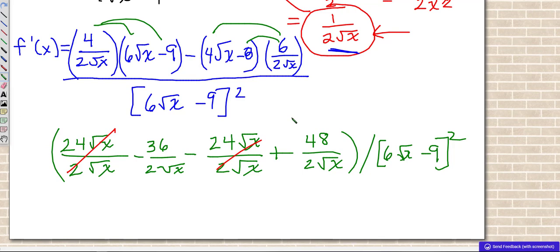I can see that 2 would go into 36 18 times. And so these actually are the same fractions, right? Because they both have the square root of x on the bottom. So 24 minus 18 would be 6 and then square roots of x. And then I have still the bottom squared.